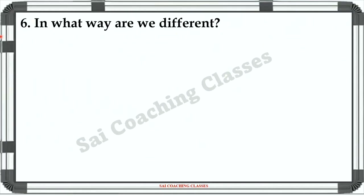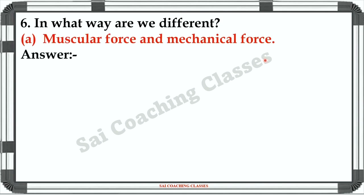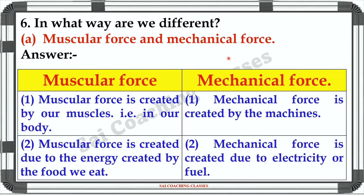Question number 6: In what way are they different? A — Muscular force and mechanical force: Muscular force is created by our muscles, that is, within our body. Mechanical force is created by machines. Muscular force is created due to the energy from the food we eat. Mechanical force is created due to electricity or fuel.